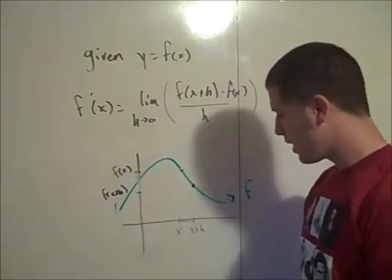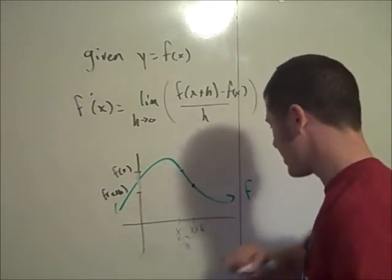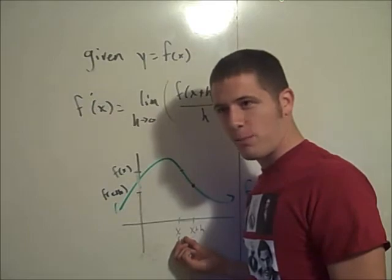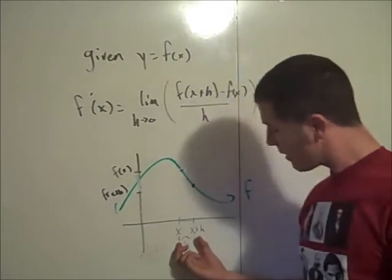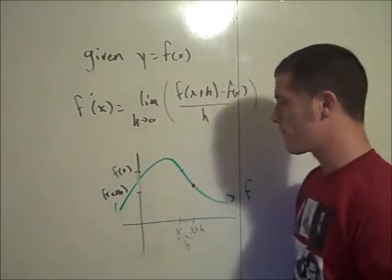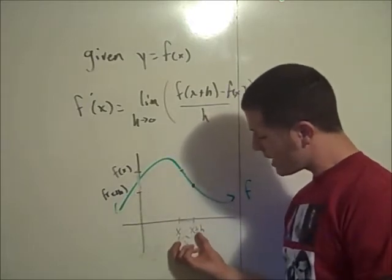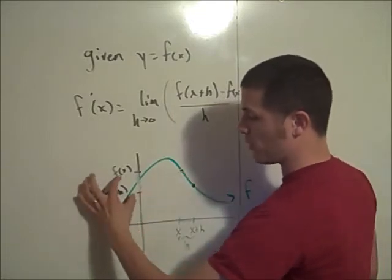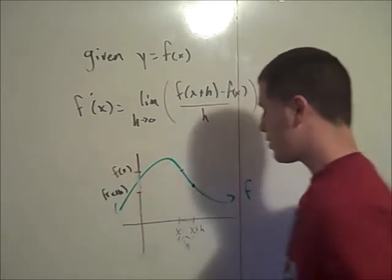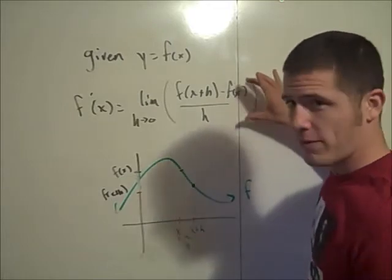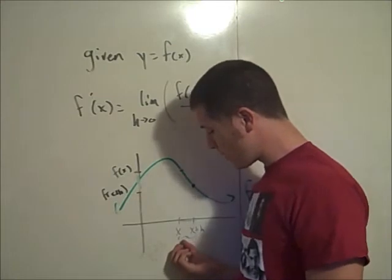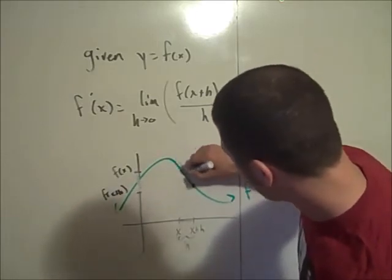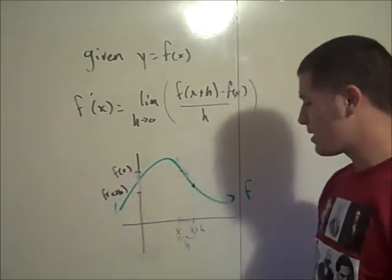Now we're going to take the limit as h goes to 0. The distance between x and x plus h is h, and we're going to shrink this interval to the smallest possible positive value — essentially to 0, only not quite. As we push x plus h closer and closer to x, that pushes the second point closer to the first, forcing f of x plus h closer to f of x. So this is the slope of the secant line, but as h approaches 0, we get closer and closer to the slope of the tangent line at point x.